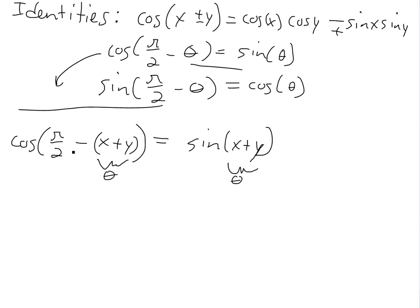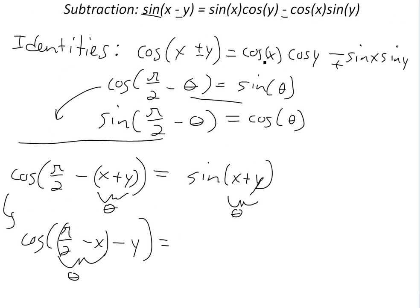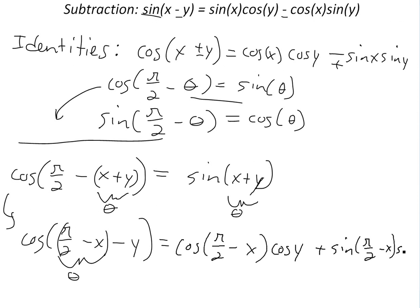Now if we rewrite this, write it as cosine of pi over two minus x, expanded out, minus y. If we consider pi over two minus x as one angle and y as another angle — so we're subtracting two angles — and we apply the cosine subtraction formula, we get cosine of pi over two minus x times cosine y, and because it's a subtraction it becomes positive, so plus sine of pi over two minus x times sine y.